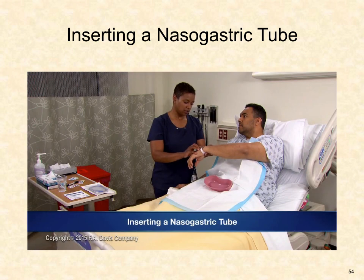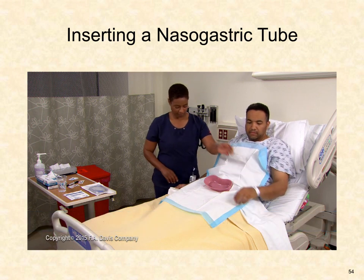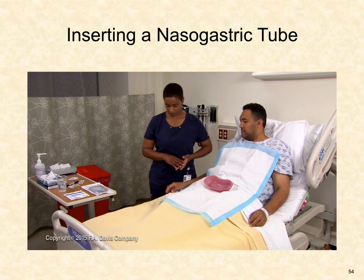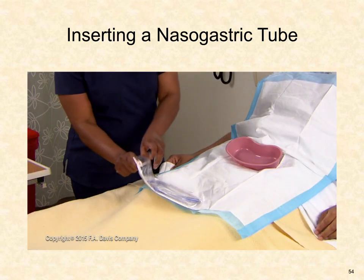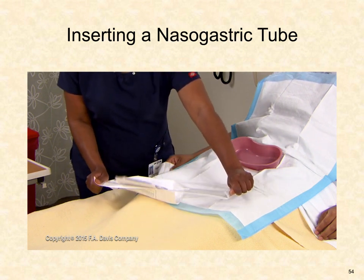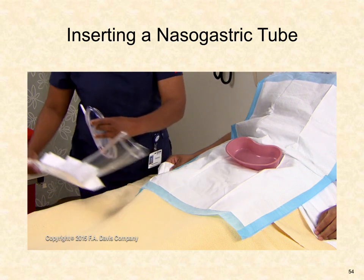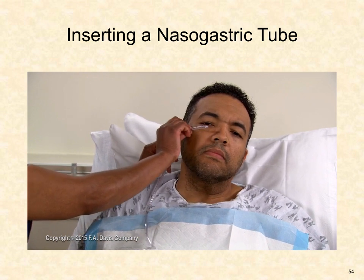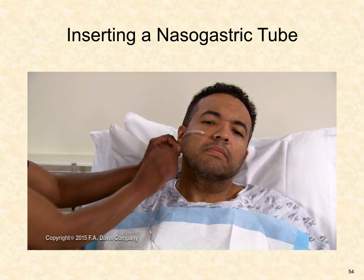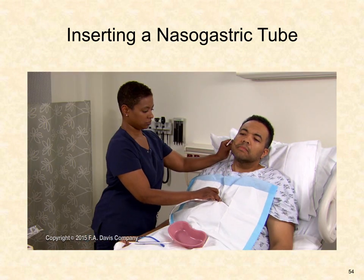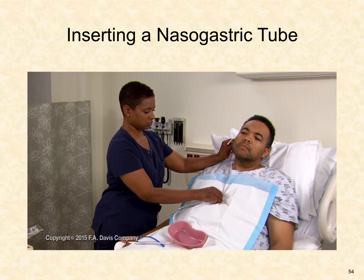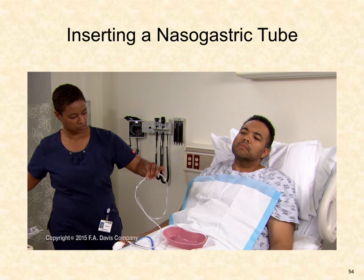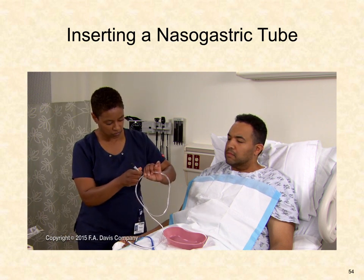When inserting a nasogastric tube, explain the procedure to the patient fully and instruct them on ways to assist. If the NG tube is to be connected to suction, set up the suction apparatus including a canister and connector tube. Measure the length of the NG tube from the tip of the patient's nose to the earlobe and then to the xiphoid process, and mark this length with an indelible marker. This determines the approximate length to insert the NG tube. Determine the patency of the patient's nares before selecting an acceptable naris.